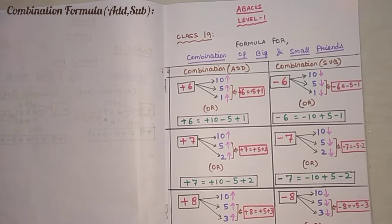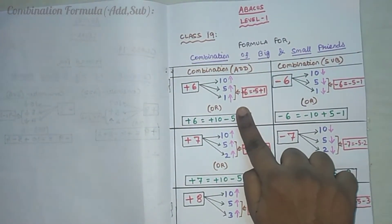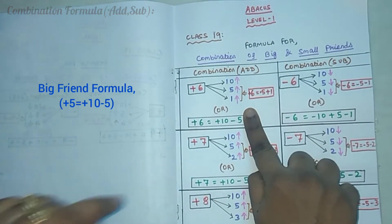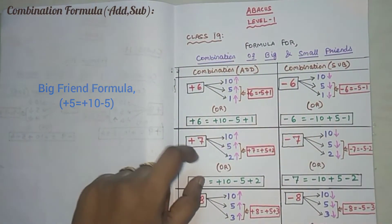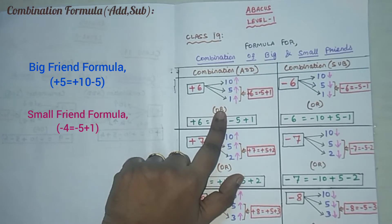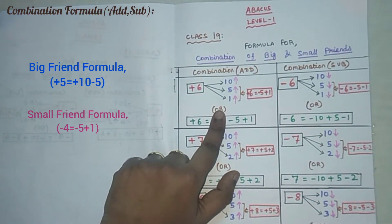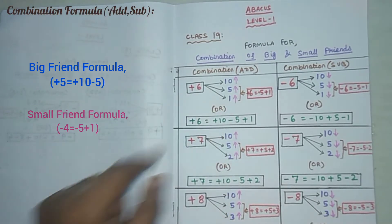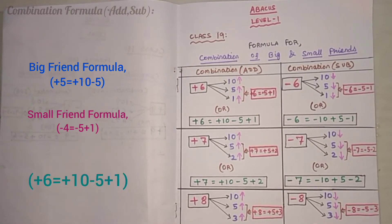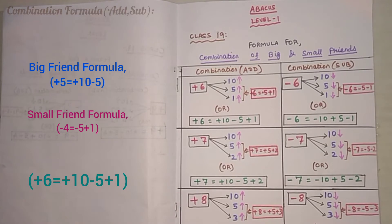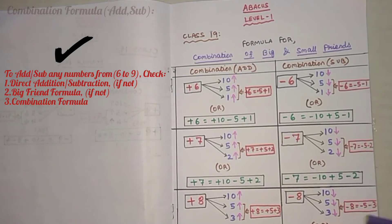First I'll explain what combination formulas are. Consider the formula: 1 + 10 − 5 = 5, which is the big friend formula for adding 5 — hence a big friend formula exists here. Next, 10 − 5 + 1 = −4, which is the small friend formula for subtracting 4 (−4 = −5 + 1) — hence a small friend formula is also available here. Combining the big friend and small friend formula is nothing but a combination of big friend and small friend.